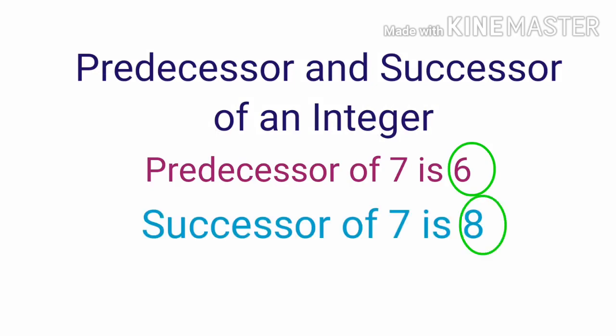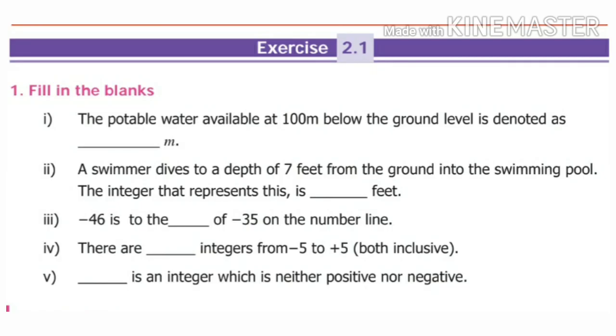Take page number 32, Exercise 2.1. Fill in the blanks. The potable water available at 100 m below the ground level is denoted as minus 100 m. Second one: a swimmer dives to a depth of seven feet from the ground into the swimming pool. The integer that represents this is minus 7 feet.